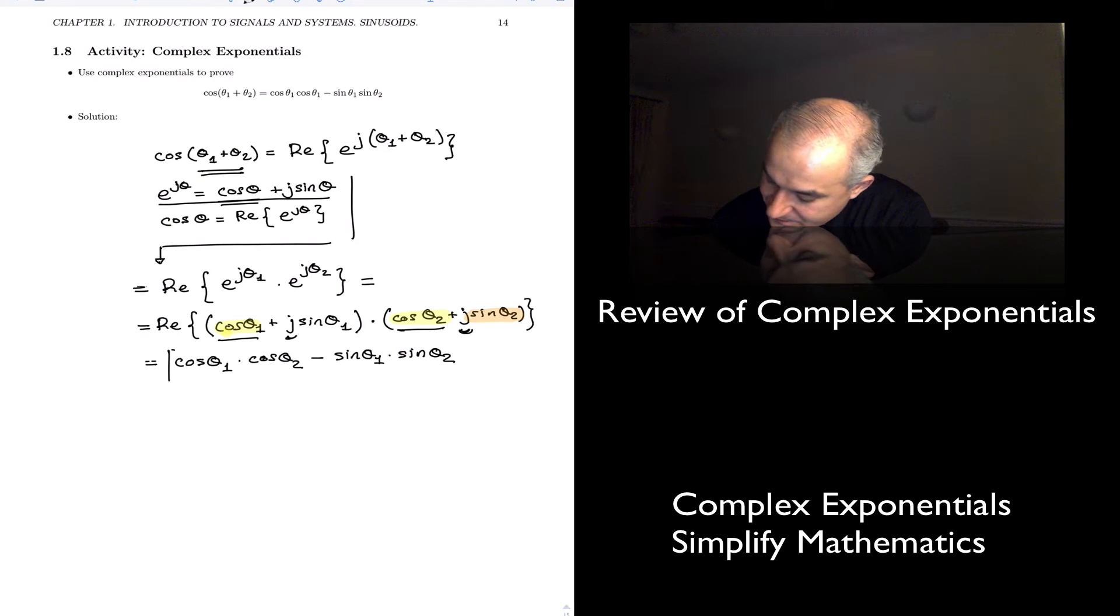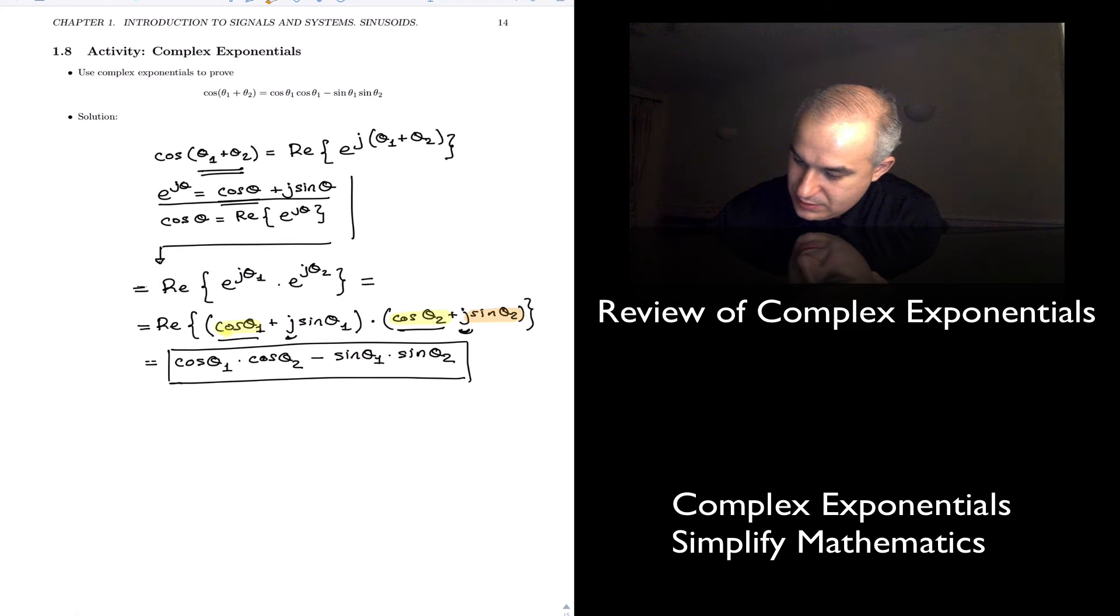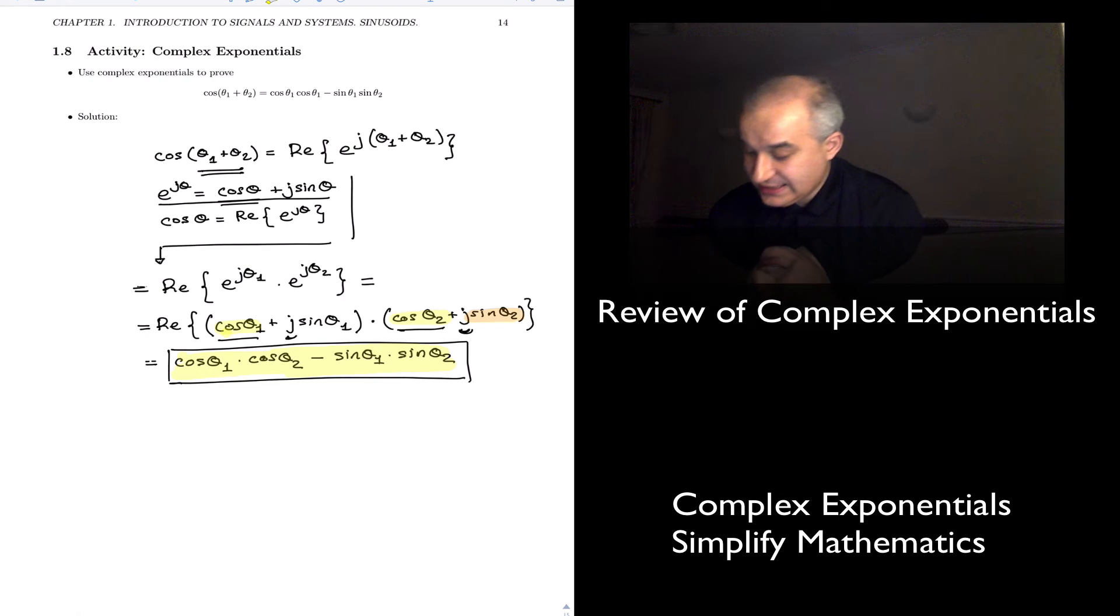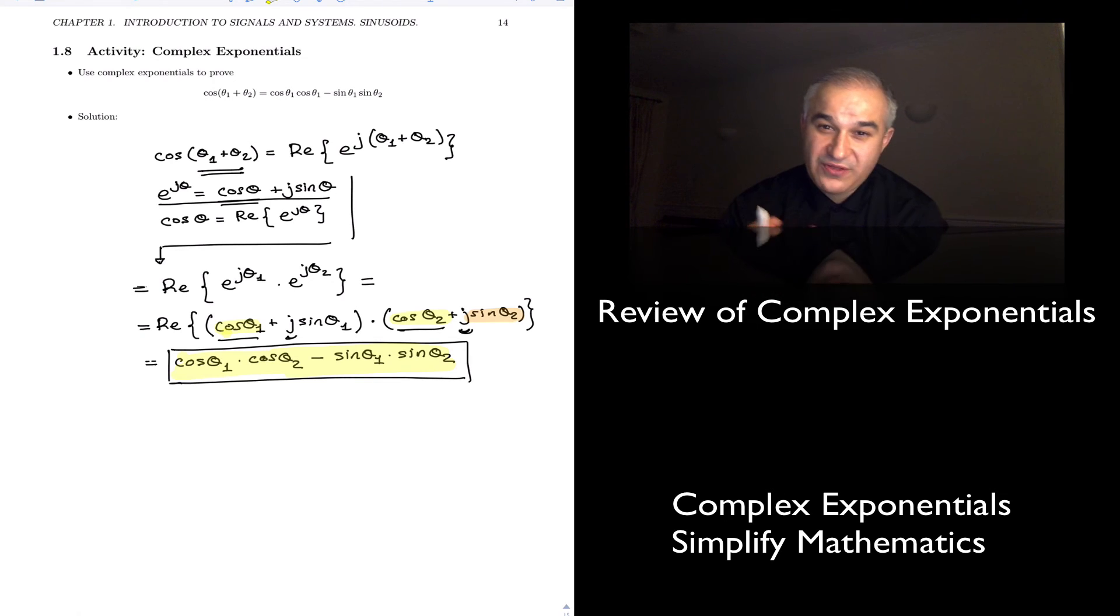In this case, where we show that cosine of theta 1 plus cosine of theta 2 is equal to cosine of theta 1 times cosine of theta 2 minus sine of theta 1 times sine of theta 2. Now, I'm not interested in the result.